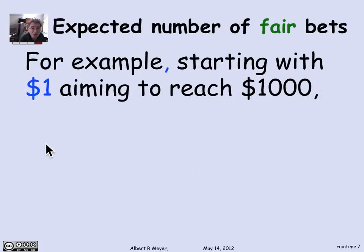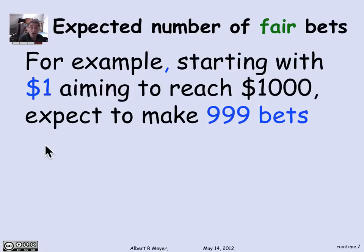For example, if you start with a dollar and you're aiming to reach $1,000, you can expect to make 999 bets before the game ends. Even though starting with $1 there's a 50-50 chance in the fair game that you'll immediately go broke — that's only a 50-50 chance. Once you win the first bet you've got $2, and it makes it less likely you'll lose right away. Overall it nets out, perhaps unintuitively, that the expected number of steps is 999.